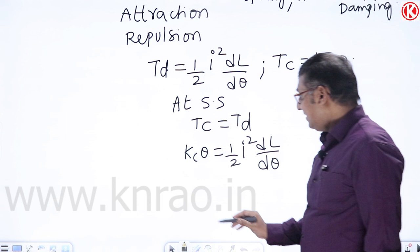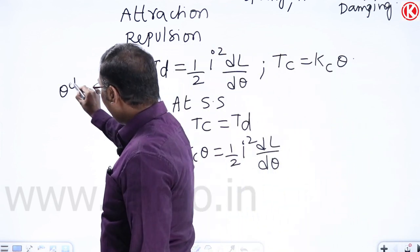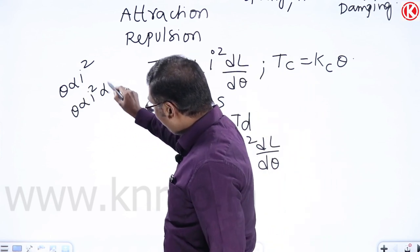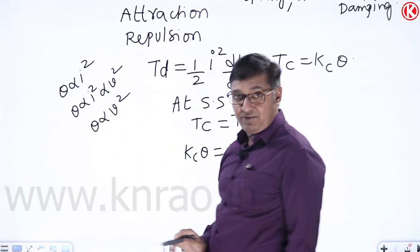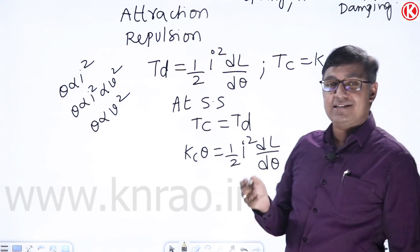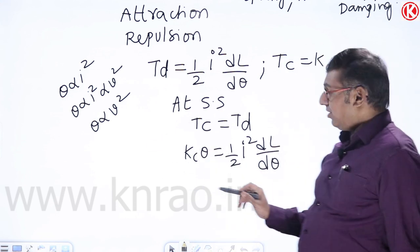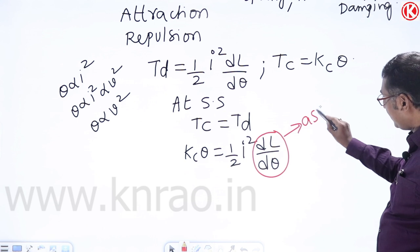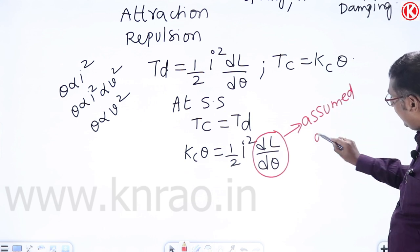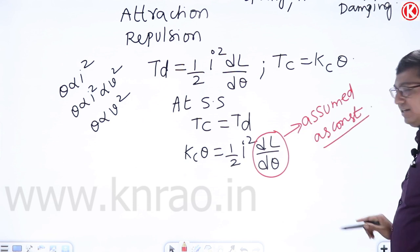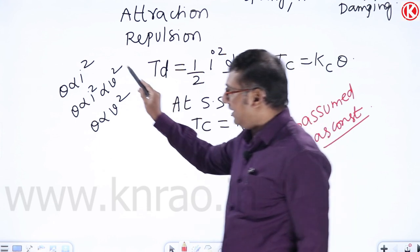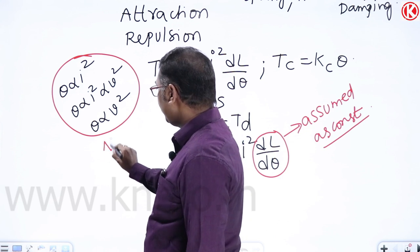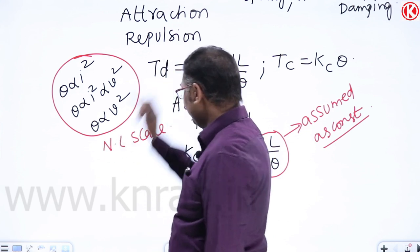From the steady-state equation, θ is proportional to i², and θ is proportional to v². If dL/dθ is assumed constant (which it practically is not), the meter scale is non-linear.